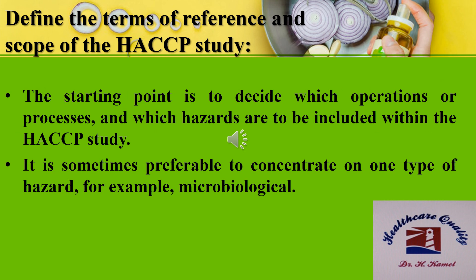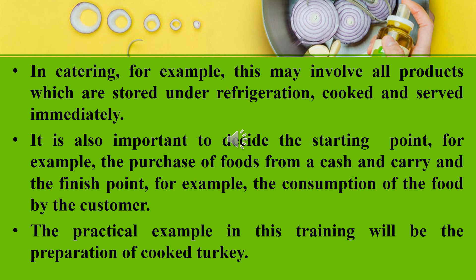The second step is to define the terms of reference and scope of the HACCP study. The starting point is to decide which operations or processes and which hazards are to be included. It's sometimes preferable to concentrate on one type of hazard, for example, microbiological. It's also important to decide the starting point, for example the purchase of foods, and the finish point, for example the consumption of the food by the customer. Our practical example is the preparation of cooked turkey.